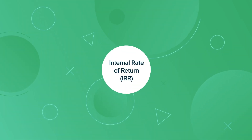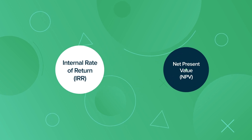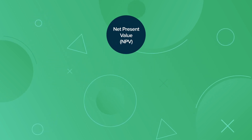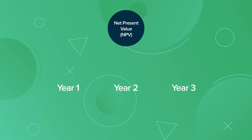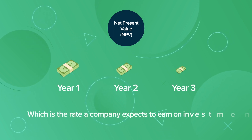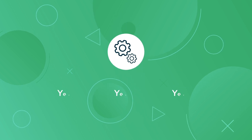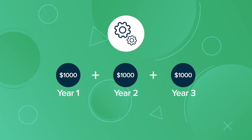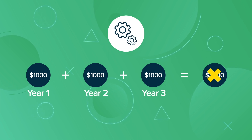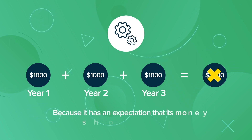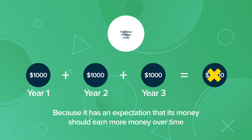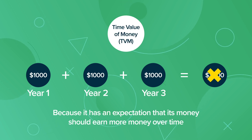To understand IRR, one must understand Net Present Value, or NPV. Net Present Value is calculated by discounting future cash flows by a discount rate, which is the rate a company expects to earn on investments. If a project offers $1,000 for three years, the present value of future cash flows is not worth $3,000 to the company, because it has an expectation that its money should earn more money over time. This concept is known as the Time Value of Money, or TVM.